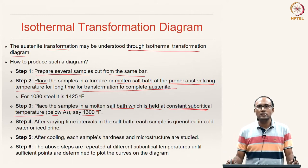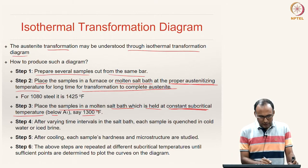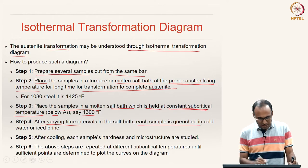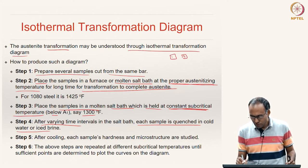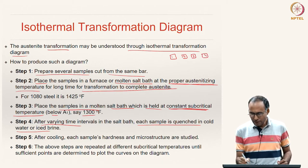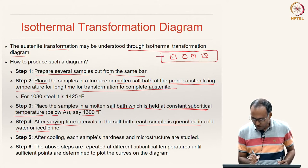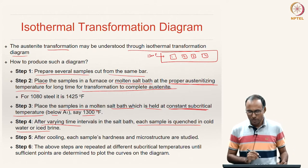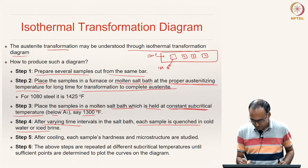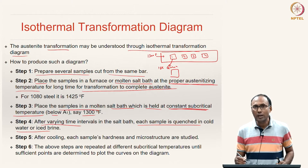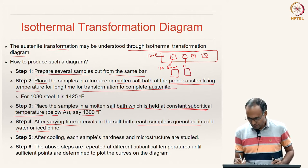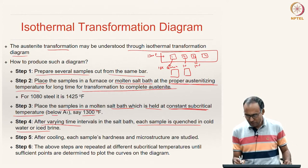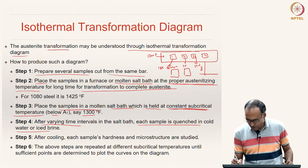Keep all the samples in the 1300°F furnace, then at varying intervals of time each sample is quenched in cold water or ice spray. For example, after 1 second take the first sample out and quench it — the microstructure tells you how much product phase formed in 1 second. Then after 10 seconds, 100 seconds, and so on, you can plot the fraction of transformed product as a function of time.